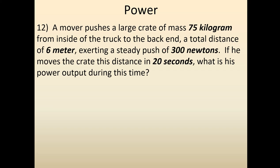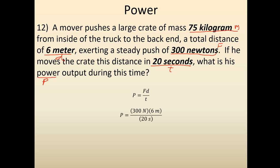Here's the next question — pause the video and work it yourself. We have a force, a mass, a time, and a distance, so of the equations we would use FD over T. The force given is 300 newtons, the distance is 6, the time is 20 — plug and chug and we get 90 watts.